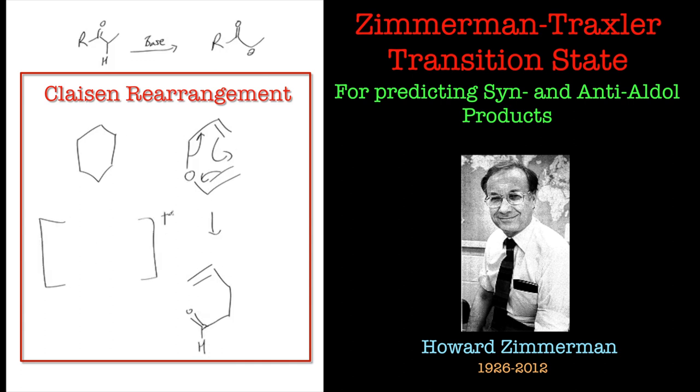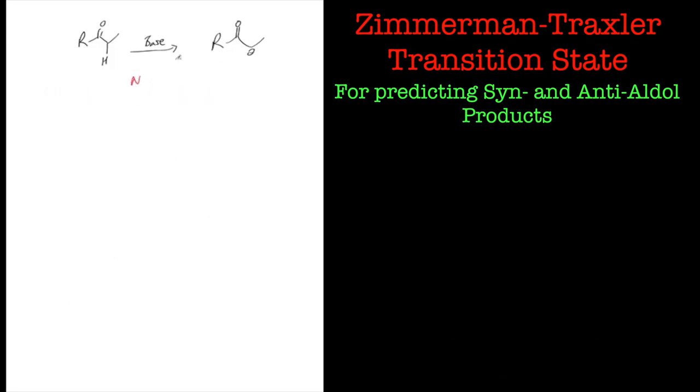Now the transition state can be compared to the Claisen or the Cope rearrangement as shown here where you get a six-membered ring with an aromatic transition state with six electrons circulating around. So we're going to use that as kind of a model for this.